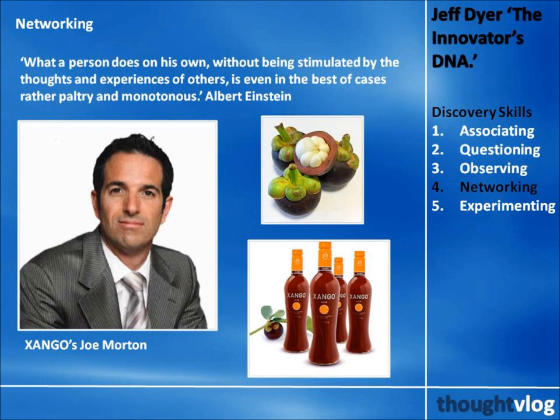An example of the power of a broad network is that of Joe Morton, who went to Malaysia. Talking with people, he heard about a native fruit called mangosteen. He rang up his brother, who was doing a PhD in medical sciences, to ask if any research had been done on the fruit's health benefits. In fact there had, and it showed that the mangosteen was jam-packed with goodness — for example, it is anti-inflammatory. This led Morton to found Zango, a fruit juice company that evolved into a billion-dollar business.